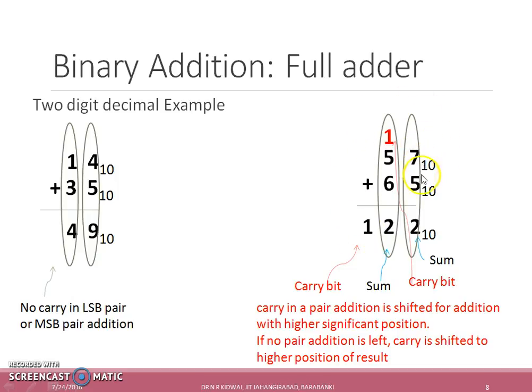Here the sum 7 plus 5 gets result 12 that is greater than 10, then 2 is placed here as a result and 1 is shifted to next higher pair for addition. Adding the two numbers and the carry generated from previous stage again gets 12, then 2 is placed at this position and since no further pair is left for addition, the carry is shifted to higher position.